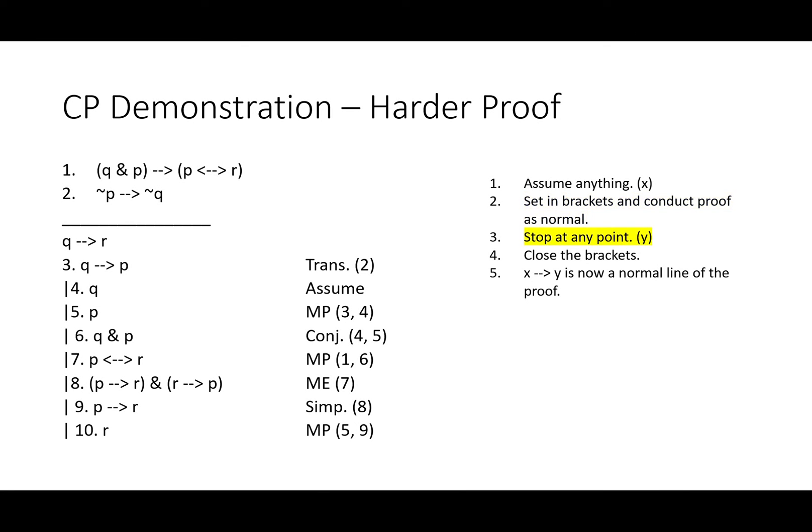This is where we'll stop. We've shown now that assuming Q and combining that assumption with premises one and two will eventually lead us to R. Which means all we have to do is finish off the proof to show that Q entails R.